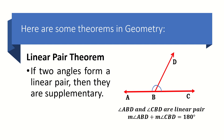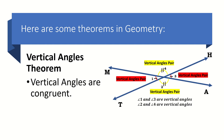Here are some theorems used in geometry. First, the linear pair theorem states that if two angles form a linear pair, then they are supplementary. In our illustration, angle ABD and angle CBD form a linear pair, so the measure of angle ABD plus the measure of angle CBD equals 180 degrees. Next, the vertical angles theorem states that vertical angles are congruent — angles opposite each other formed by two intersecting straight lines. We have two pairs of vertical angles: angle 1 and angle 3, and angle 2 and angle 4.